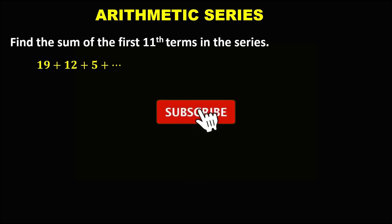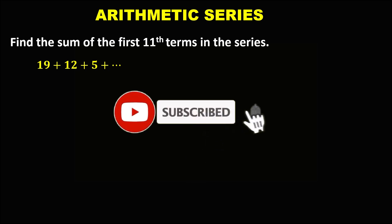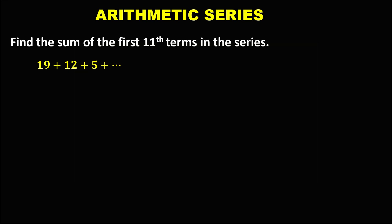Okay, so let's solve this problem. To find the sum of the first 11 terms in the arithmetic series, we observe that from the given series there is no last term, or a sub n.